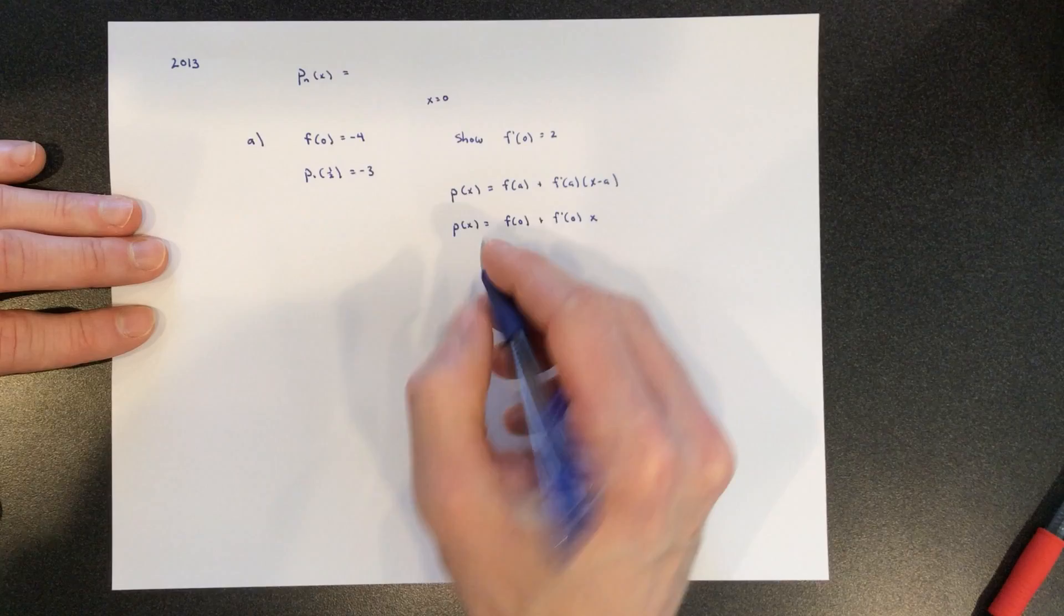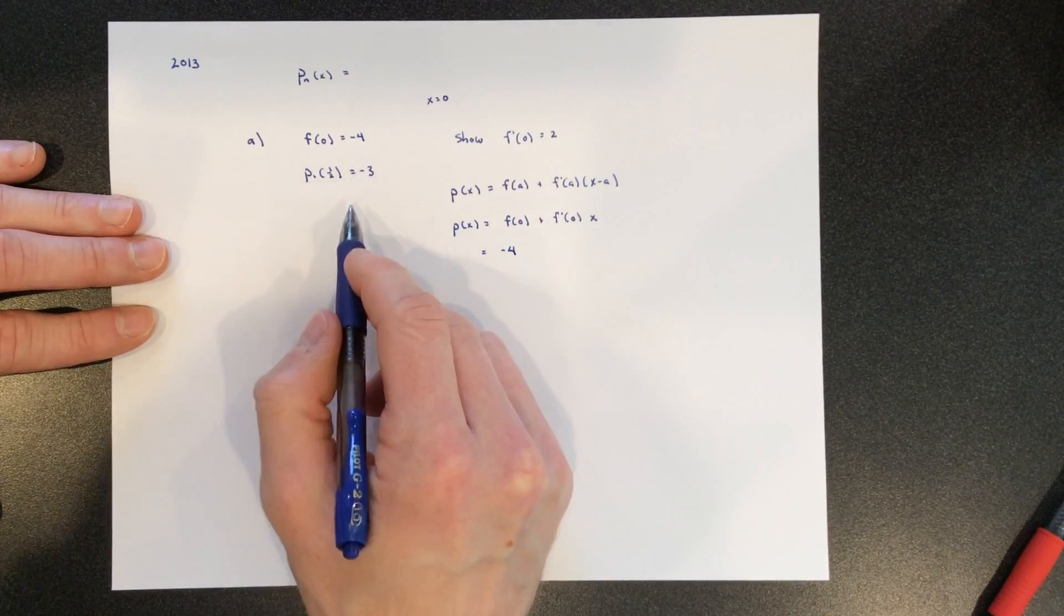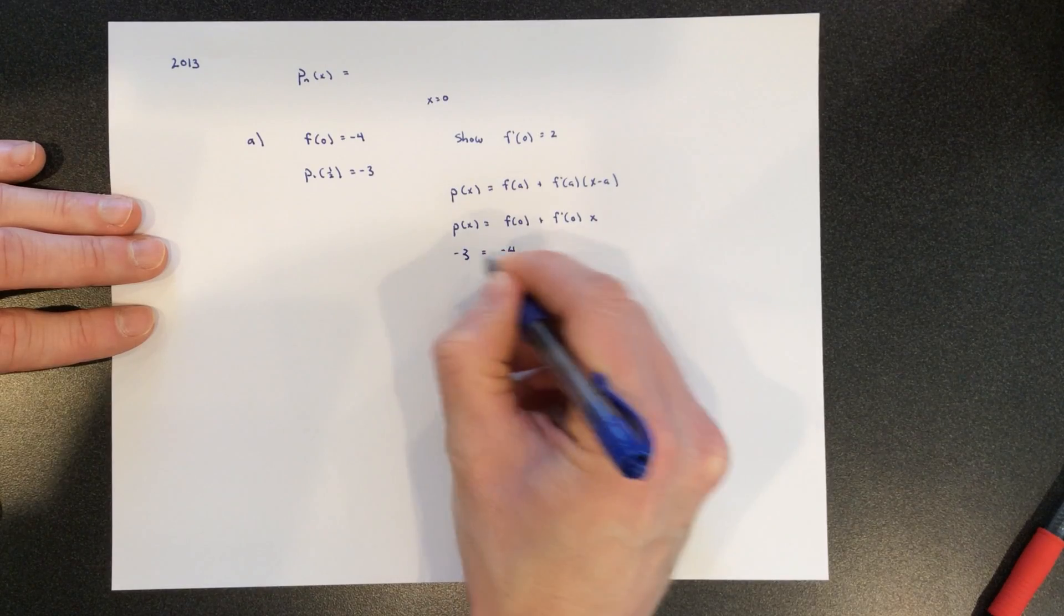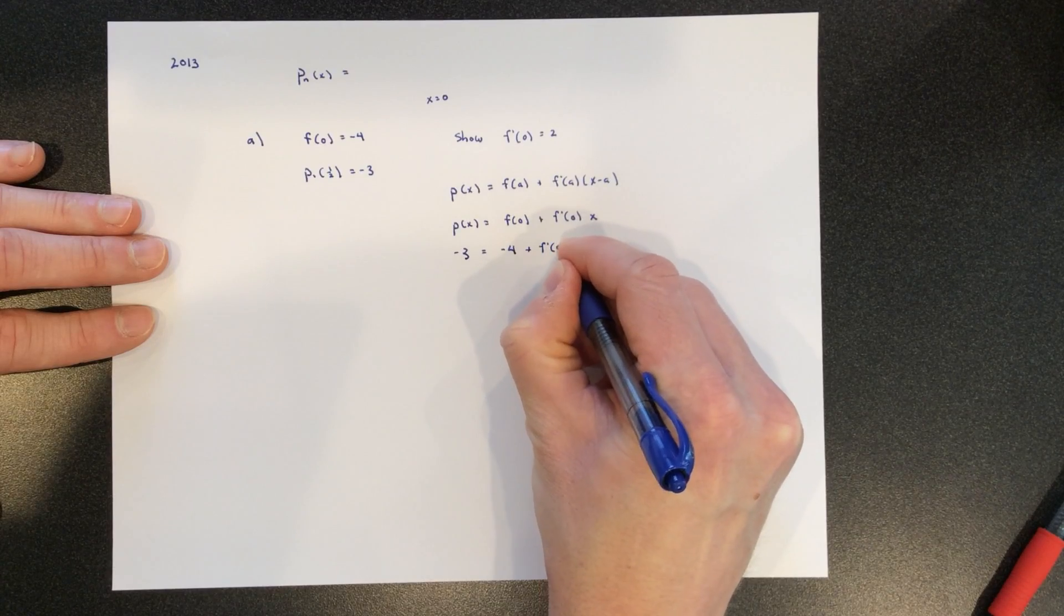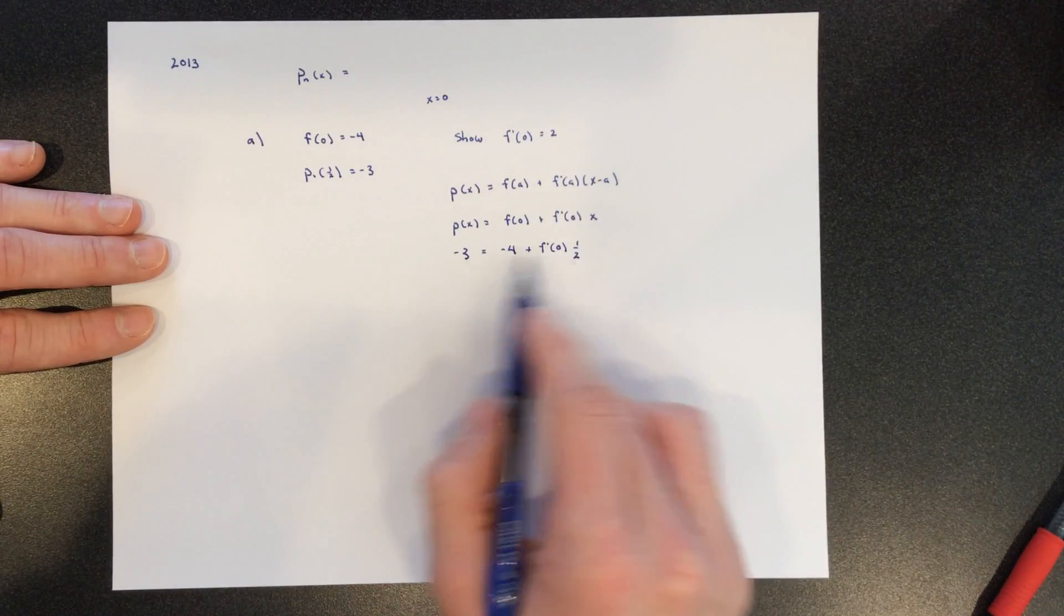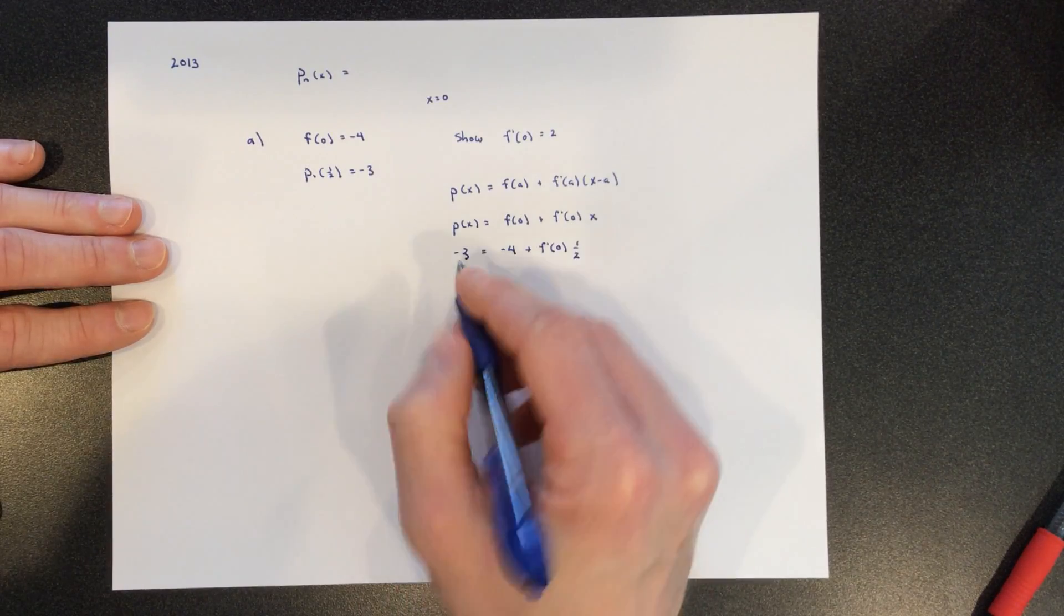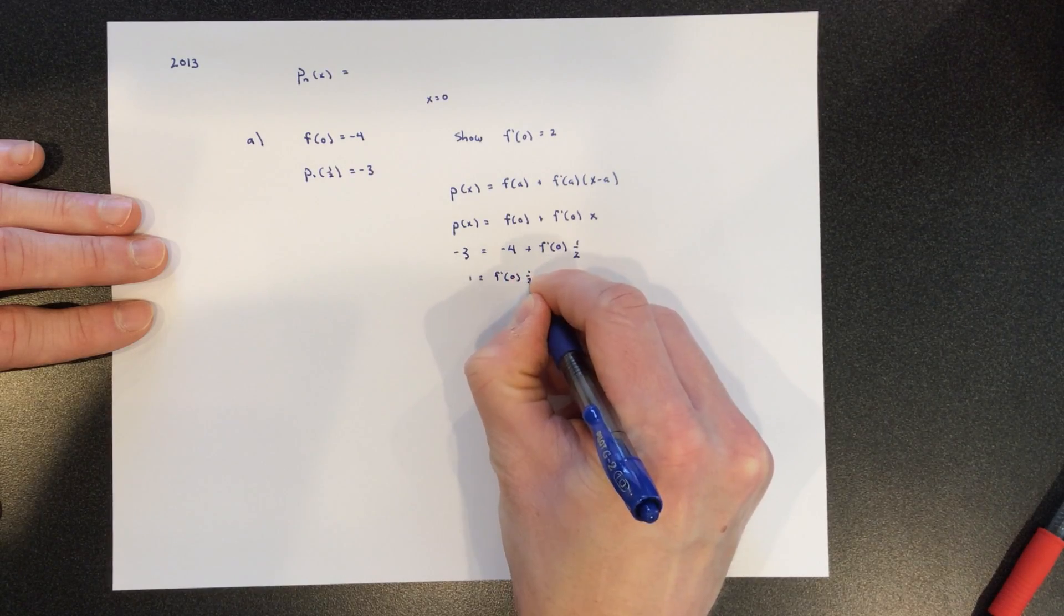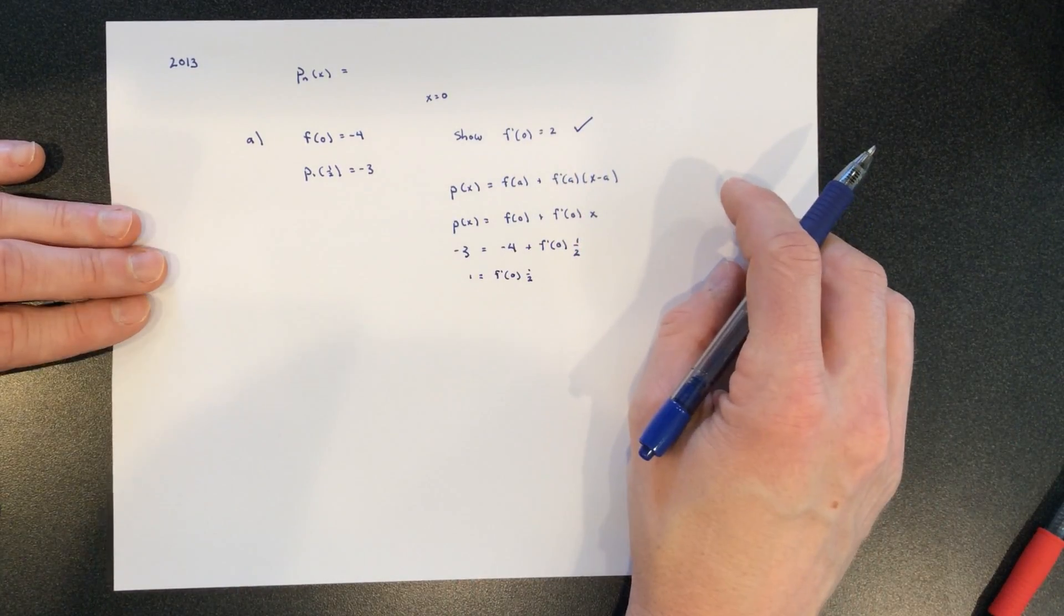So if we know that f of 0 was negative 4, p of a half is negative 3, which means when we plug in a half for x, we get negative 3. So negative 3 is the y value we get. You can do that in a variety of ways. So add 4 over here, and we get 1 equals f prime of 0 times a half, and now we know that f prime. We just showed that f prime is 2, check.